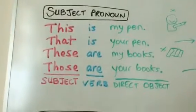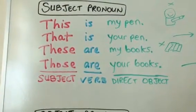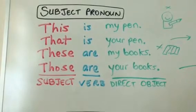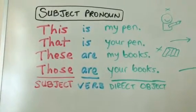Those are your books pointing over at you. So, this, that, these, and those subject with a verb is or are and a direct object.